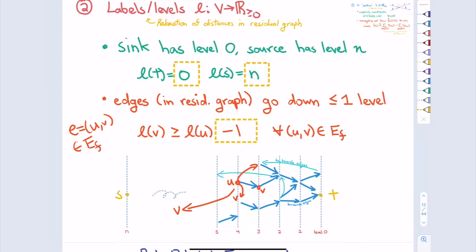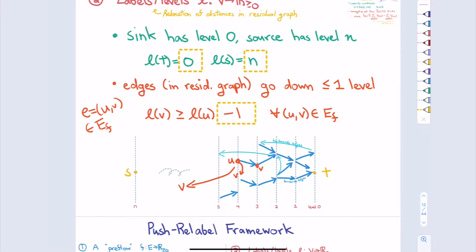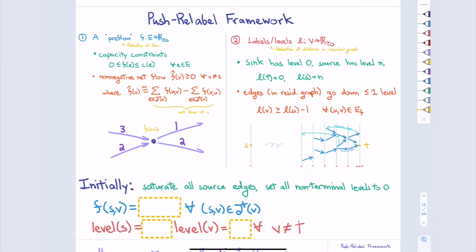When you start with a generic ST flow problem, we're going to take all edges leaving S and saturate them immediately. If an edge had capacity five, I push five units; if capacity three, I push three. As a result, all those edges disappear from the residual graph and go backwards. We then set the level of S to be N, and everyone else to level zero, so all those level constraints are satisfied.